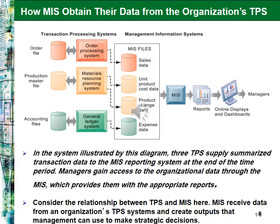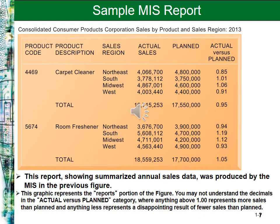This slide shows the relationship between Transaction Processing Systems and Management Information Systems. There are three types of Transaction Processing Systems: the order processing system, the materials resource planning system, and the general ledger system. The MIS uses data and information supplied by these TPS to form and make reports for managers to support their decisions. Here we have a simplified MIS report.